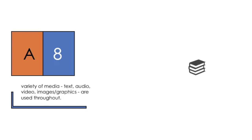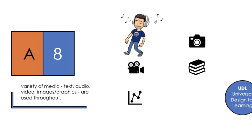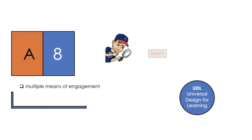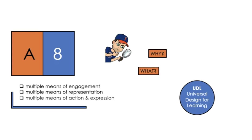A8 follows the Universal Design for Learning model, UDL, as a blueprint for creating content that provides multiple means of engagement — the why of learning — multiple means of representation — the what of learning — and multiple means of action and expression — the how of learning.